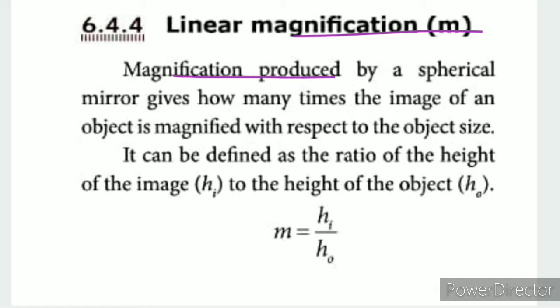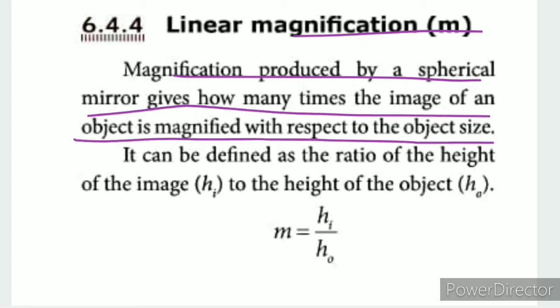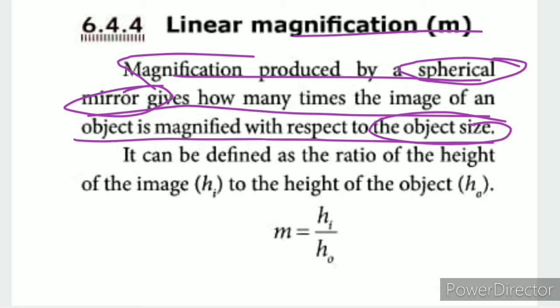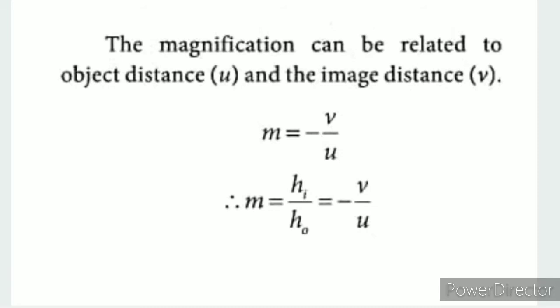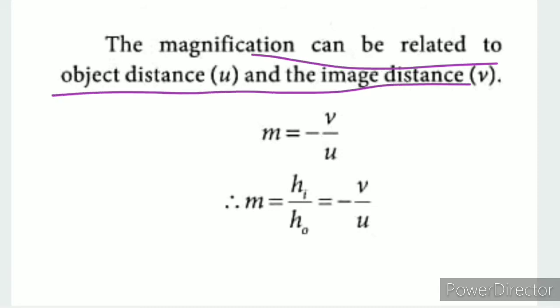The magnification produced by a spherical mirror tells us how many times the image of an object is magnified with respect to the object size. Spherical mirrors are of two types: concave and convex. Linear magnification is defined as the height of the image divided by the height of the object. Magnification can also be related to object distance and image distance.